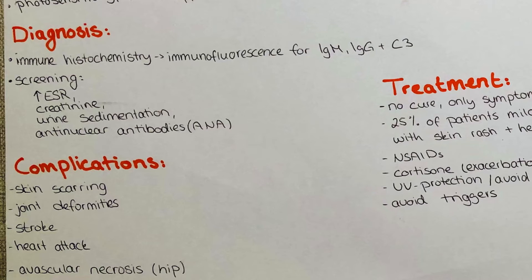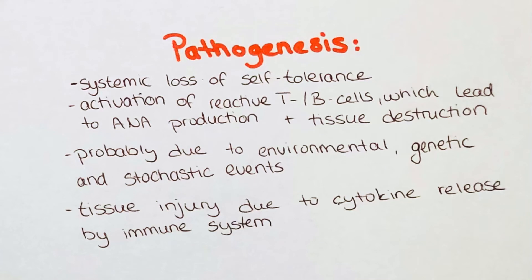The clinical presentation as well as the blood tests are the gold standard for diagnosing a patient suspected to be affected by this autoimmune disease. In the development of lupus, there is a systemic loss of self-tolerance leading to the activation of reactive T and B cells, which in turn lead to the production of antinuclear antibodies and release of cytokines, which ultimately result in destruction of tissues. The exact cause is yet unknown, but it is thought to be linked to environmental, genetic, and stochastic events.